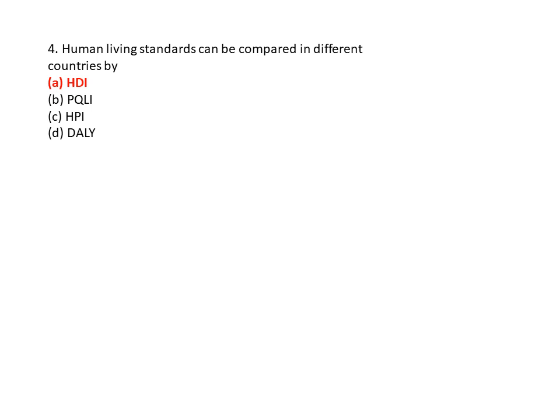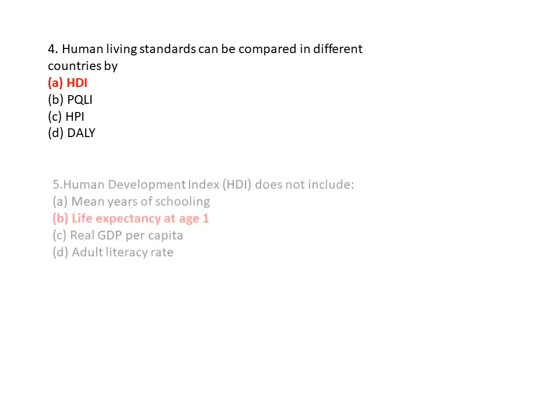Question 4: Human living standard can be compared in different countries by? Option A is HDI, option B is PQLI, option C is HPI, and option D is DALY. So the correct answer is option A — HDI.